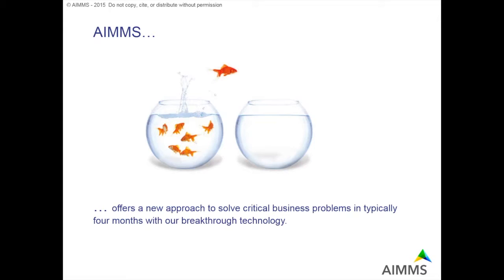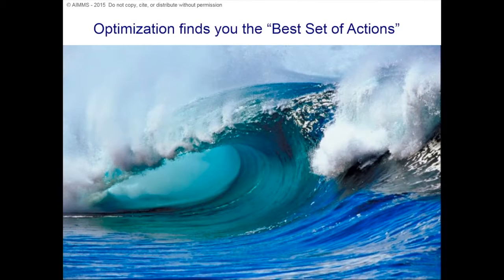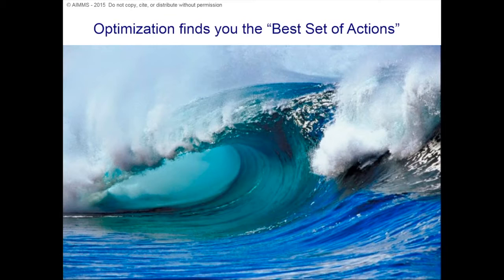Working with AIMS, as our promise states, we can solve basically any critical business problem in about four months with our breakthrough technology. There are many examples where we see that happening — with NAMPAC Glass but also with major other companies — where in a really short time a critical business problem was solved in a way that planners now work with a brand new AIMS application that they actually like to use. Part of that power is in the core of AIMS: a powerful optimization engine that forms the foundation of any AIMS application. In any planning situation, you can depict all the difficulties and aspects to take into account, and that engine finds you the best possible production schedule — whether the most cost-effective, highest revenue, or most profitable.